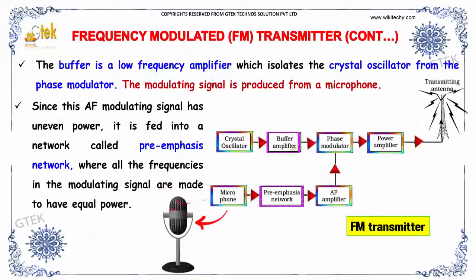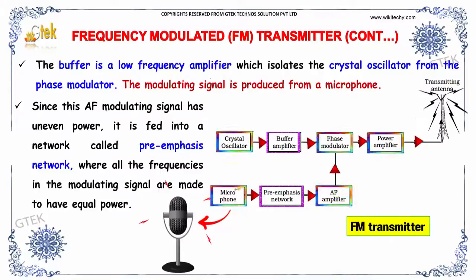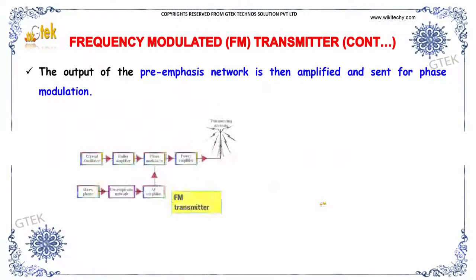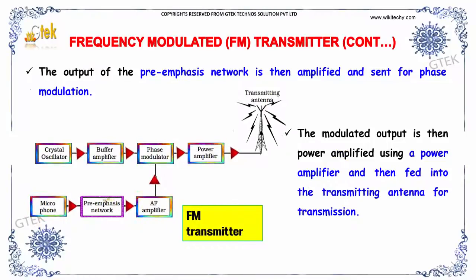The buffer is a low frequency amplifier which isolates the crystal oscillator from the phase modulator. The modulating signal is produced from a microphone. Since this AF modulating signal has uneven power, it is fed into a pre-emphasis network, which makes all the frequencies in the modulating signal have equal power. The output of the pre-emphasis network is then amplified and sent for phase modulation.